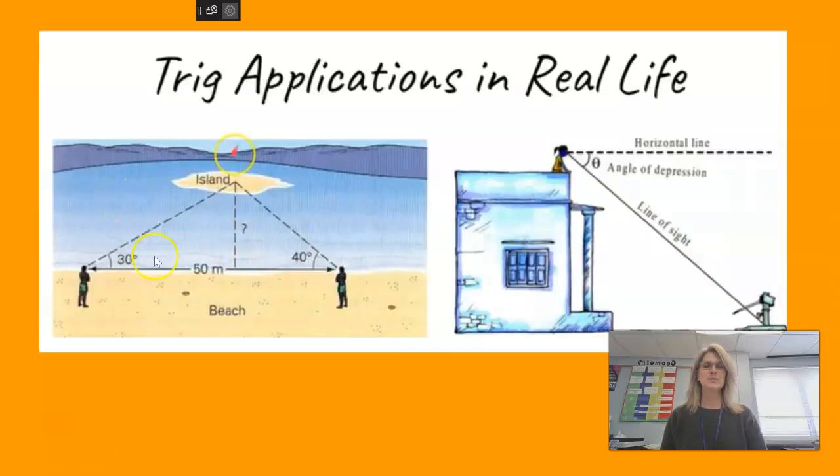Here's an example of application. Let's say you and a friend were on a beach and you were wondering how far away that island is from the beach, and we always measure by perpendicular distances. You can always measure how far you and your friend are apart. You can use instruments to find the angle that you're looking from the horizon, and then use trigonometry for that kind of thing. So measuring things that are unmeasurable, for example.